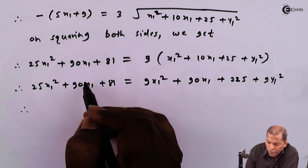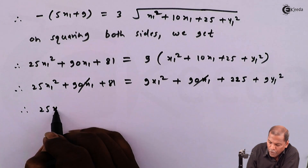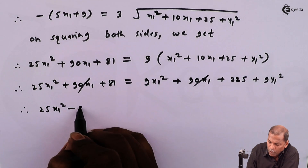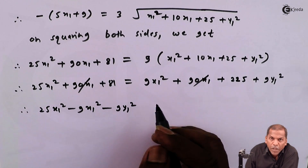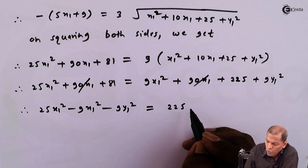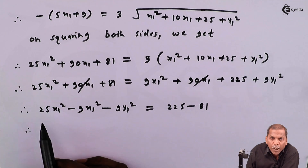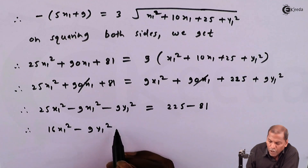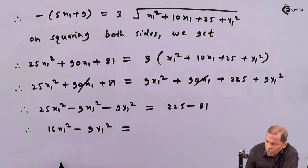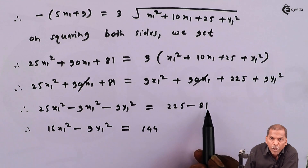Now we cancel 90x1 from LHS and RHS. So the next step will be: 25x1 squared minus 9x1 squared minus 9y1 squared is equal to 225 minus 81. So 25x1 squared minus 9x1 squared gives us 16x1 squared minus 9y1 squared is equal to 144.